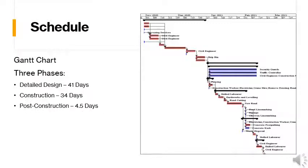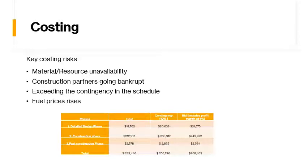Now Michael will take us through costing. The cost was broken down into the three sections of the schedule including detailed design phase, construction phase and post-construction phase, and all tasks were priced. These costs were estimates from the Cordell Cost Guide and gave us a total cost of roughly $230,000. Risk can however have a major impact on the overall project cost, with key risks including extension of the finish date past the schedule contingency, fuel prices, and material and resource unavailability. A 10% contingency was added to account for variance in the estimate and these risks, as well as a 5% profit margin, resulting in a final bid of roughly $270,000.